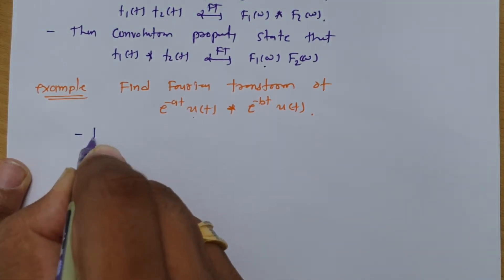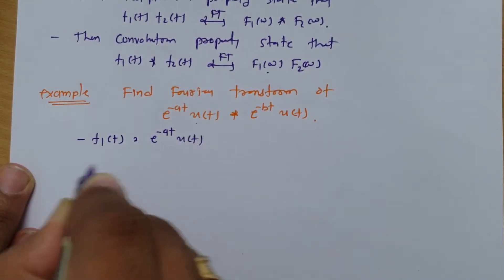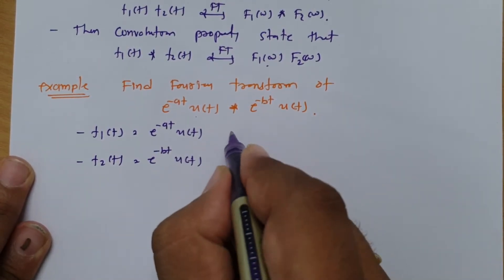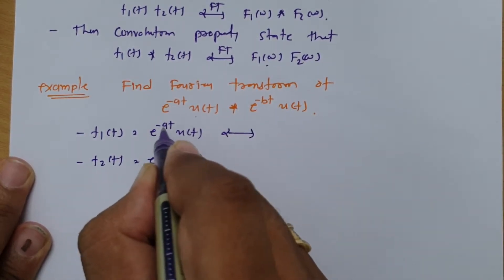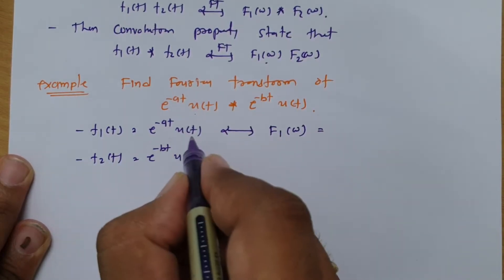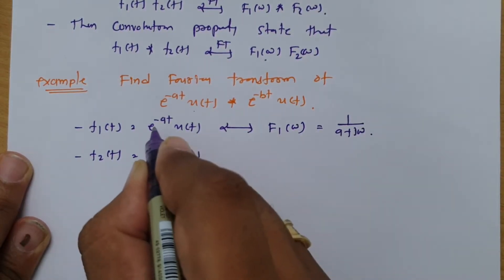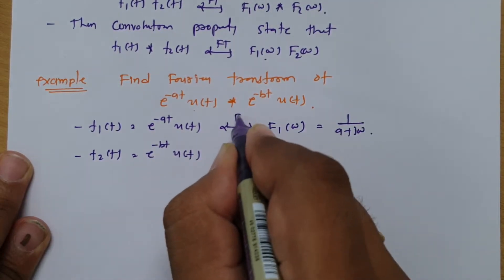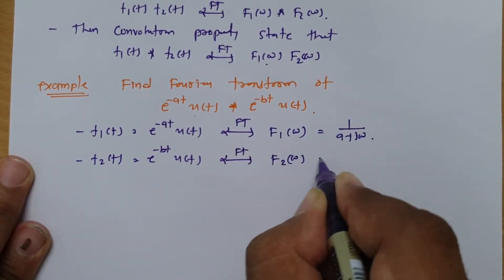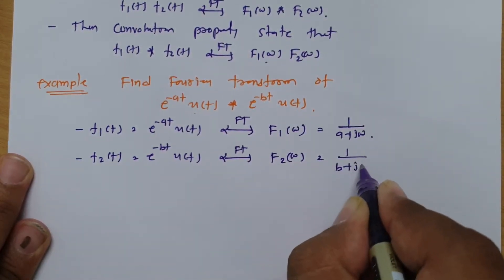Let f1(t) = e^(−at)u(t) and f2(t) = e^(−bt)u(t). The Fourier transform of f1(t), which is F1(ω), follows the basic rule for an exponential signal: it equals 1/(a + jω) for e^(−at)u(t). And taking the Fourier transform of f2(t), that is F2(ω), for e^(−bt)u(t) this equals 1/(b + jω).